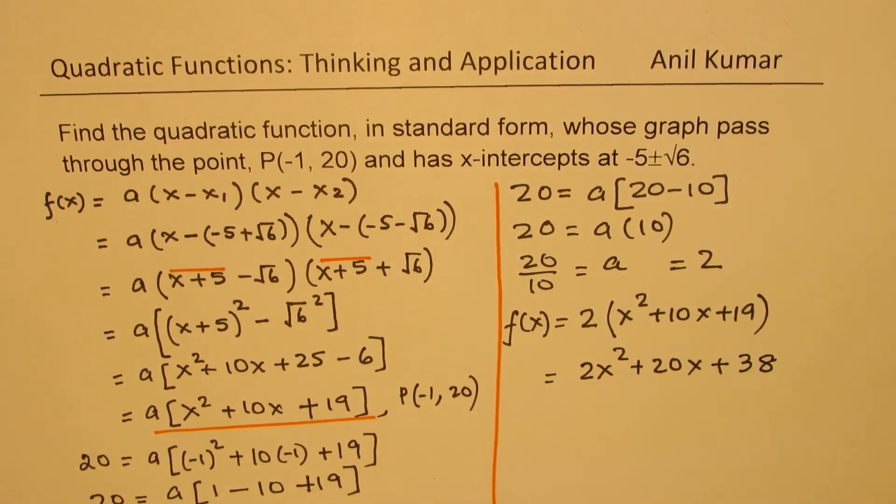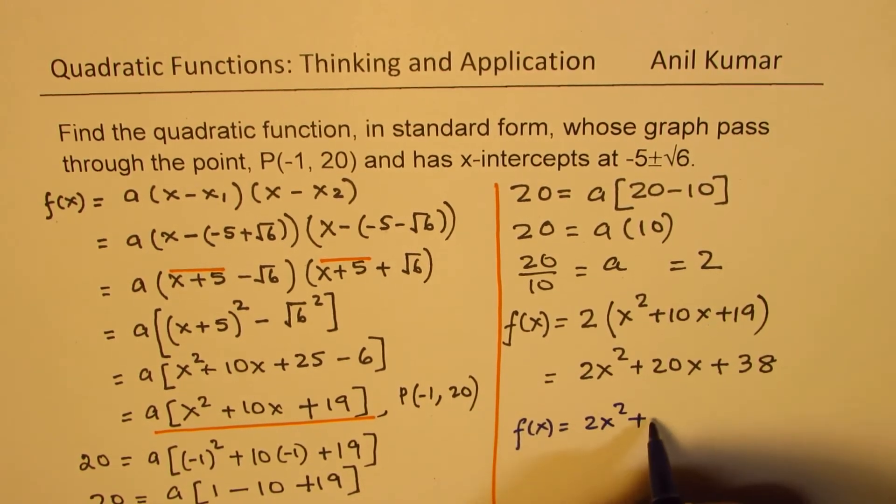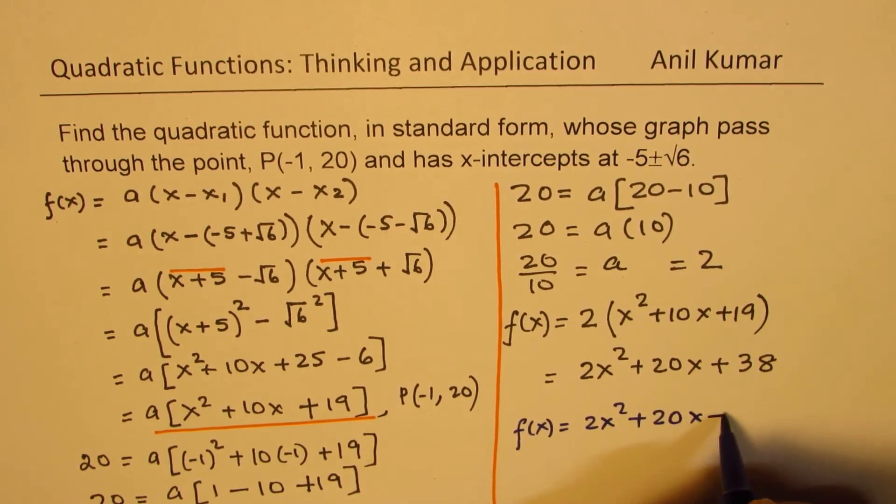So that becomes the quadratic function in standard form. So we get our answer, which is f(x) equals to 2x² + 20x + 38.